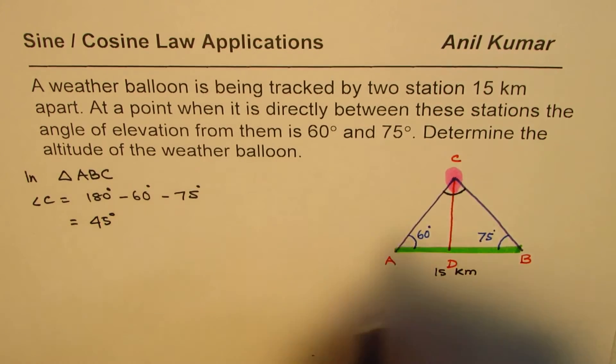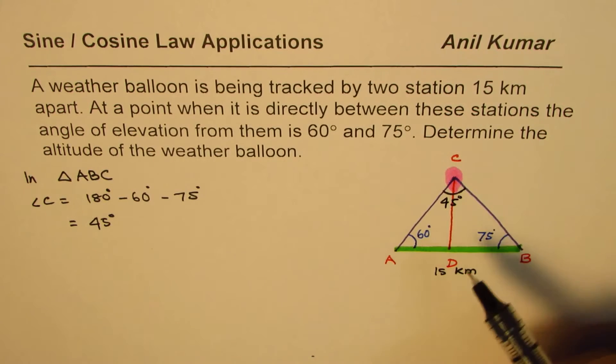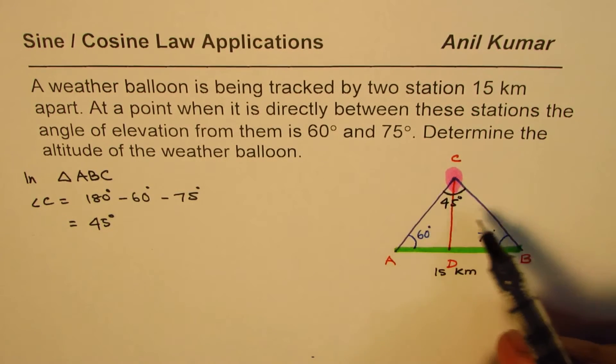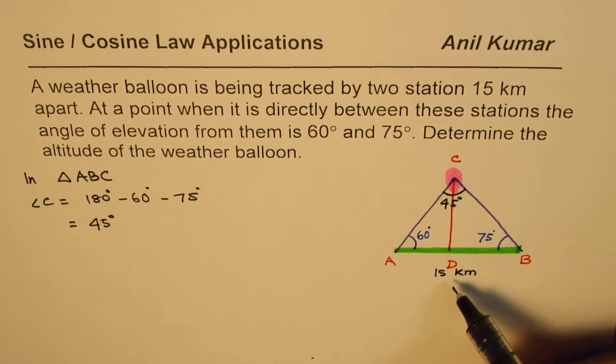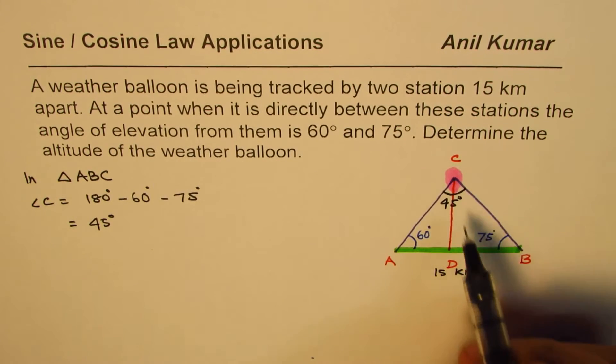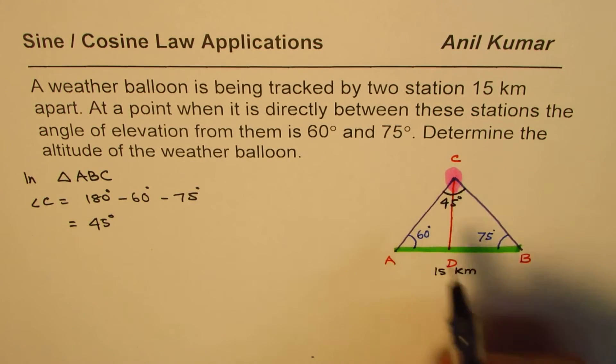So this is 45 degrees. Now we know a pair which is angle and opposite side, so that helps to find or to apply the sine law. So we can now apply the sine law. We have the option to find either side. Let me find what AC is.